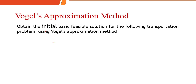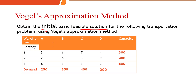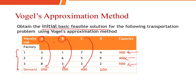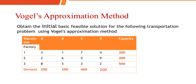We have a problem which talks about obtaining a basic feasible solution for the transportation problem. We have three factories: Factory 1 can produce 300 units, Factory 2 produces 400 units, and Factory 3 produces 500 units. Demand comes from four different warehouses: Warehouse A has a demand of 250, B has 350, C has 400, and D has 200.